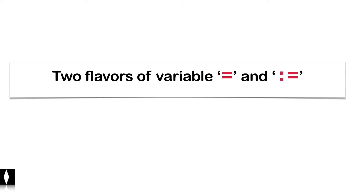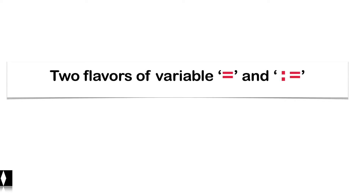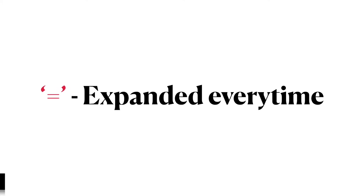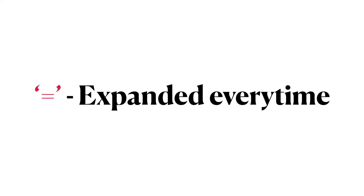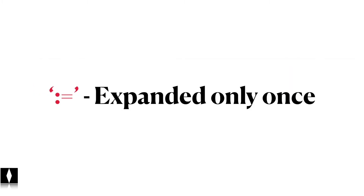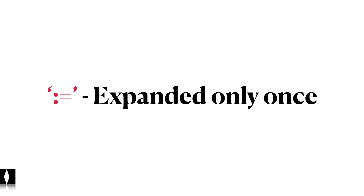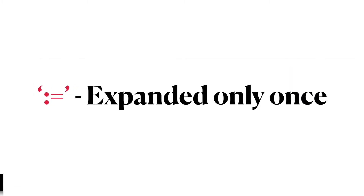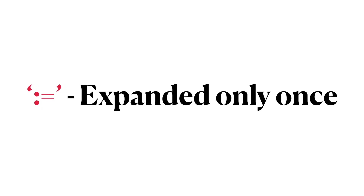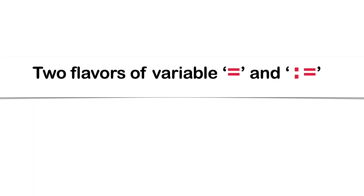A variable can be assigned in two ways: one with the equals to sign, and another with the colon equals to sign. A variable assigned with equals to sign is expanded for every call, but a variable assigned with colon equals to sign is expanded only once. Let's understand this difference with an example.